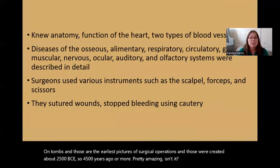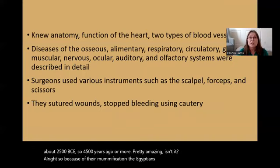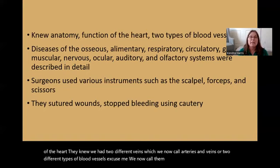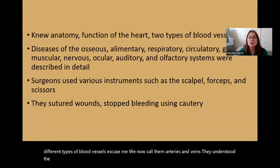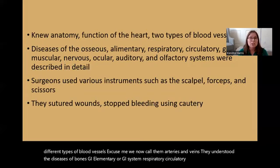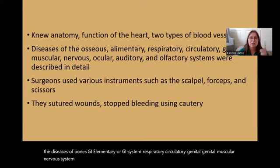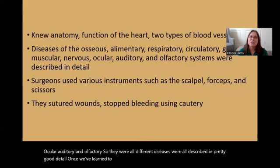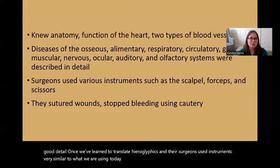Because of their mummification, the Egyptians knew anatomy. They knew the function of the heart, and understood that we have two different types of blood vessels — what we now call arteries and veins. They understood diseases of bones, the GI system, respiratory, circulatory, genital, muscular, nervous system, ocular, auditory, and olfactory. Different diseases were all described in good detail once we learned to translate hieroglyphics. Their surgeons used instruments very similar to what we use today — scalpels, forceps, scissors.